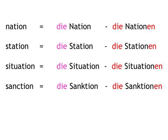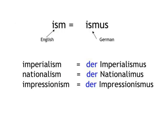Also, most English -isms are the same in German, just with an additional -us at the end, and they're all masculine nouns. So we have: Imperialism → der Imperialismus. Nationalism → der Nationalismus. Impressionism → der Impressionismus.